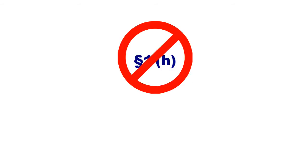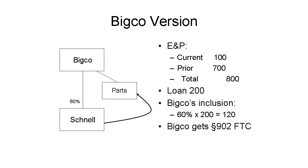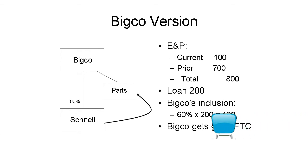If we change the facts a bit and say Schnell's 60% shareholder was BigCo, Inc., a Delaware corporation, and the loan was to BigCo's Michigan subsidiary, Parts, Inc., then an additional, possibly favorable, effect arises. The inclusion is the same, but BigCo is eligible for a deemed paid foreign tax credit on its share of German income tax that Schnell paid. I discussed this deemed paid foreign tax credit in another video linked here.